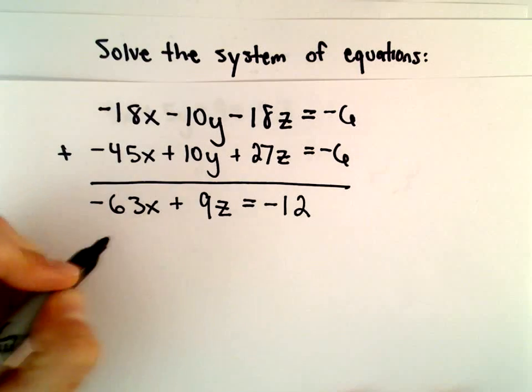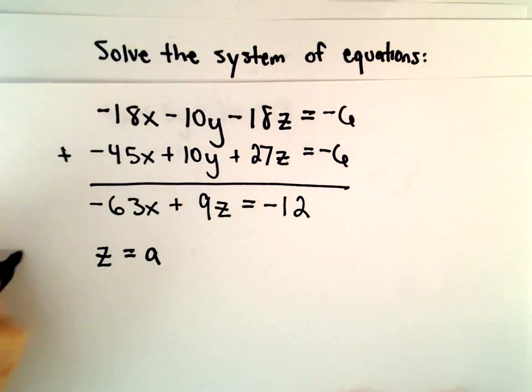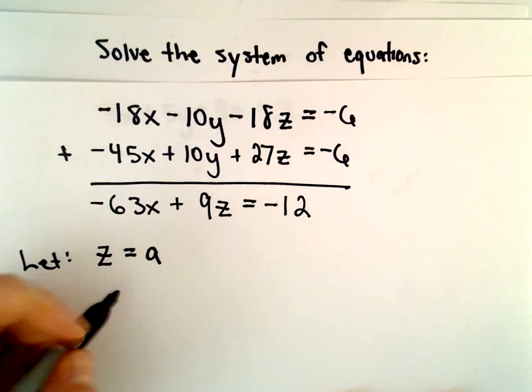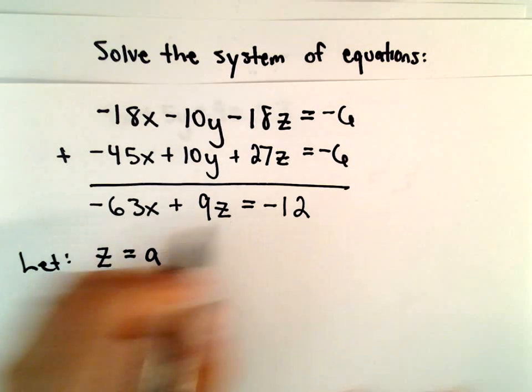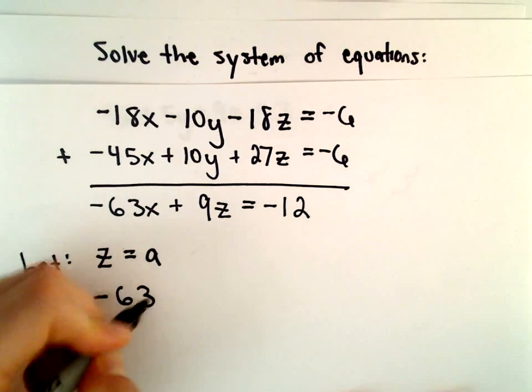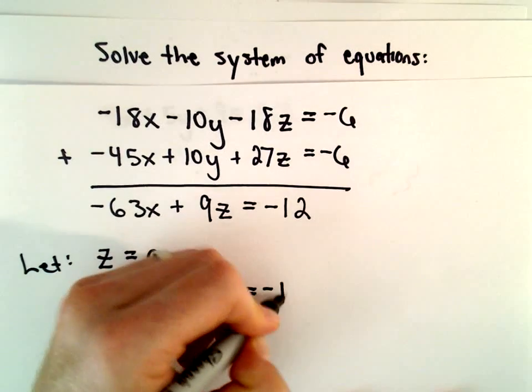Now what we're going to do is assign z. We're going to let z equal the value of a. To find the value of x in terms of a, we'll just take our equation here. We've got negative 63x plus 9 times a equals negative 12.